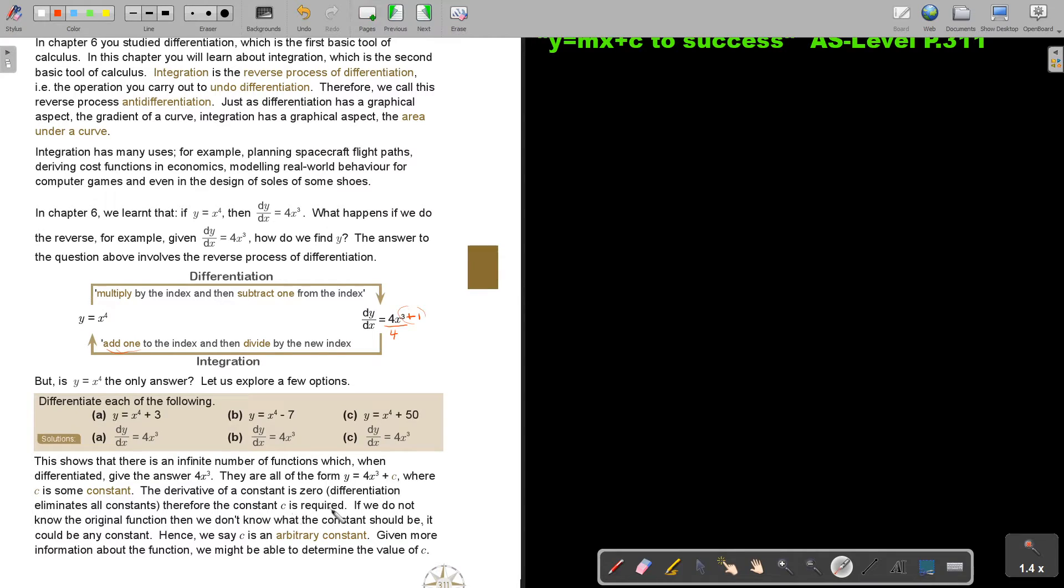Therefore, the constant c is required. If we do not know the original function, then we don't know what the constant should be. It could be any constant. Hence, we say c is an arbitrary constant. Given more information about the function, we might be able to determine the value of c.